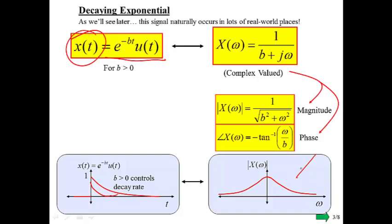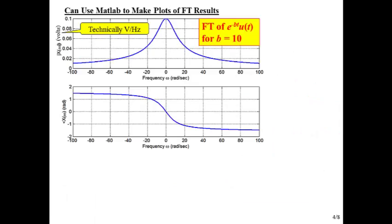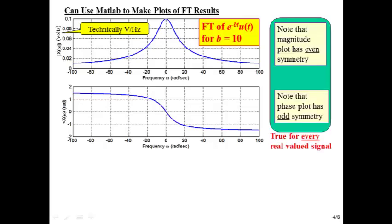It goes lower like this, but expands quite a bit further out. Looking at how the effect of b changes this plot provides some really good insight. Here's a more detailed, technically correct MATLAB plot for this Fourier transform. You can see what the magnitude and phase looks like.